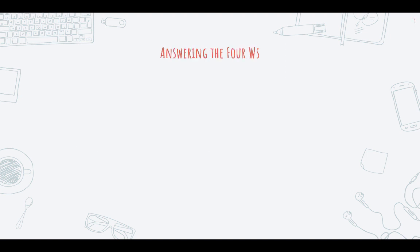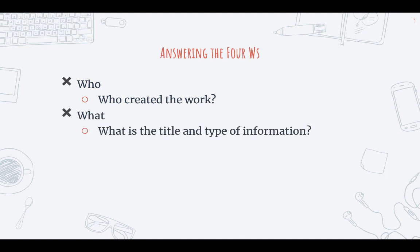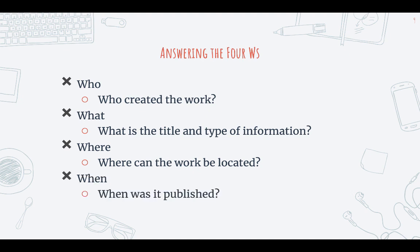The MLA citation guidelines are meant to answer these four W's: Who created the work? What is the title and type of information being cited? Where can the work be located? And when was this work published? So MLA works cited citations have nine core elements, but you're not necessarily going to use all nine elements every single time.